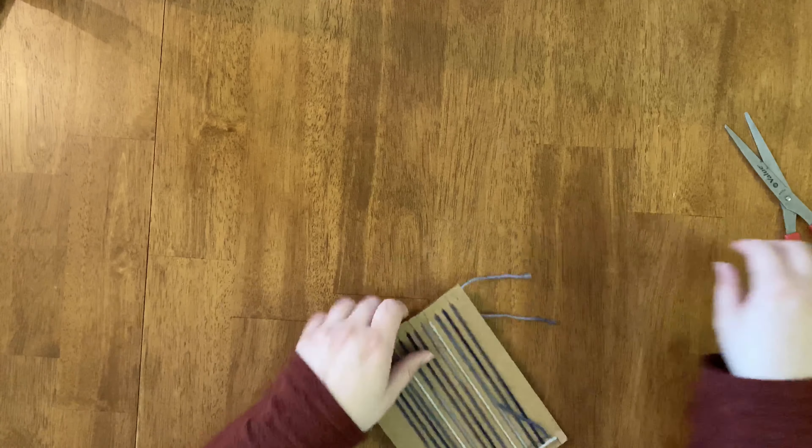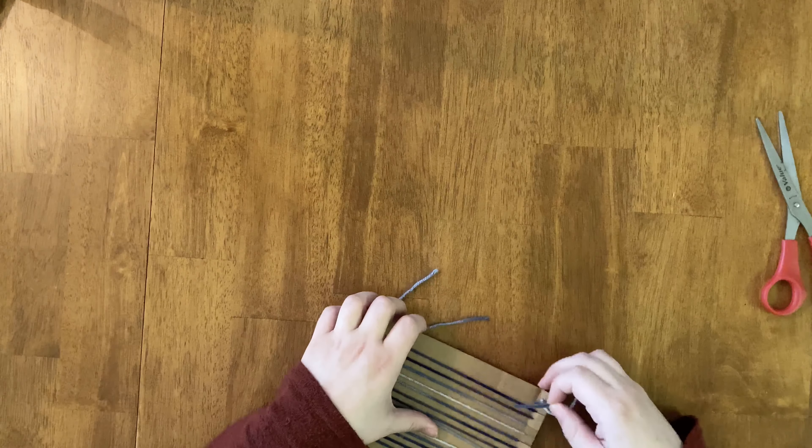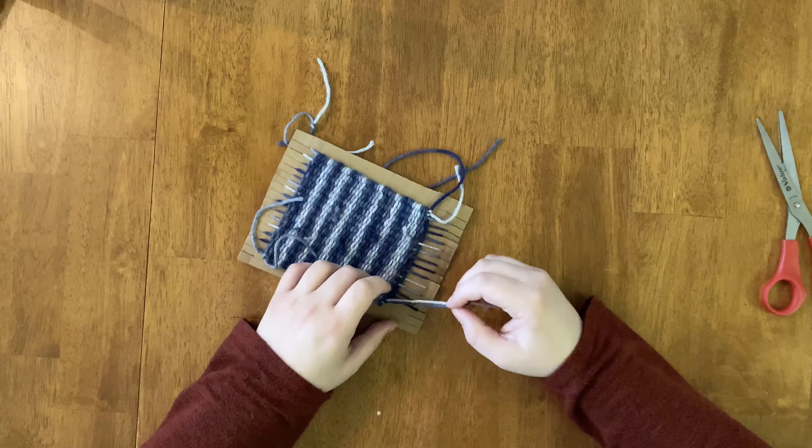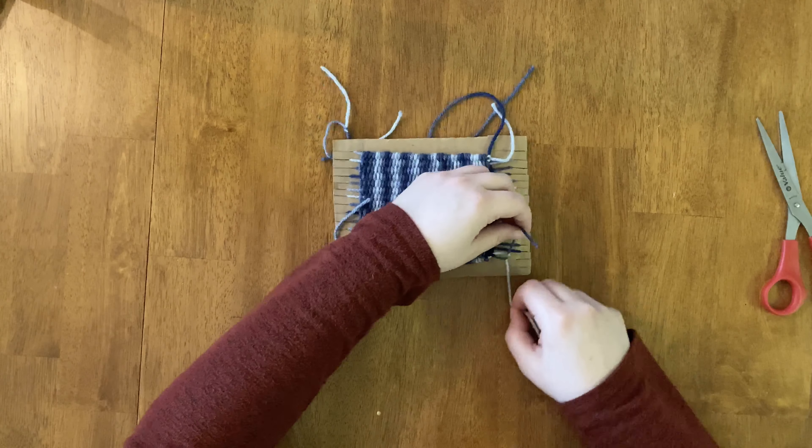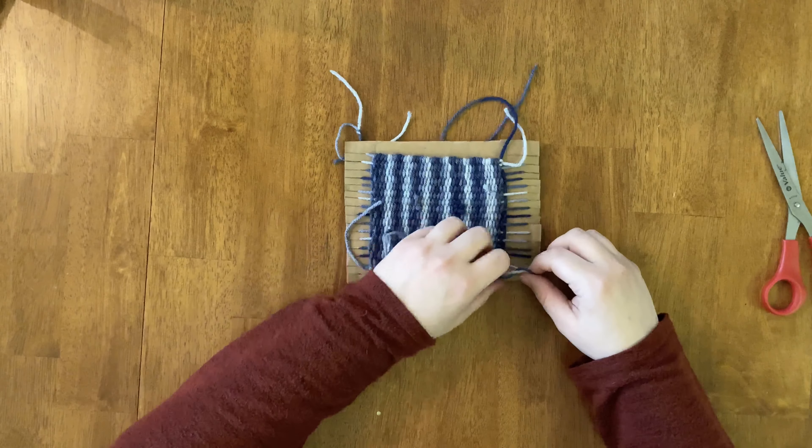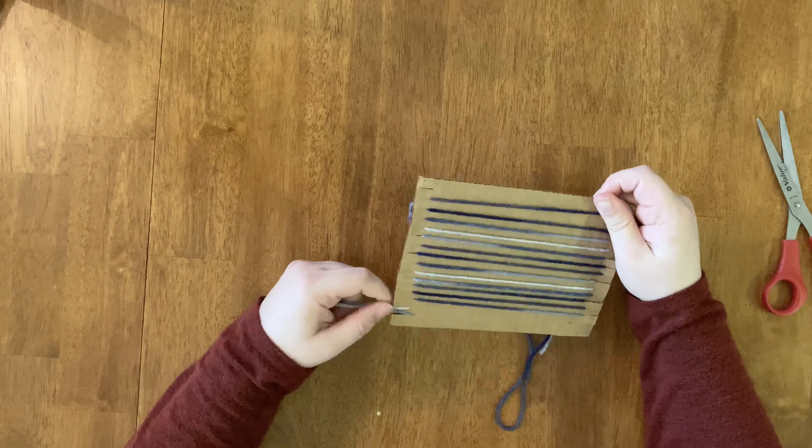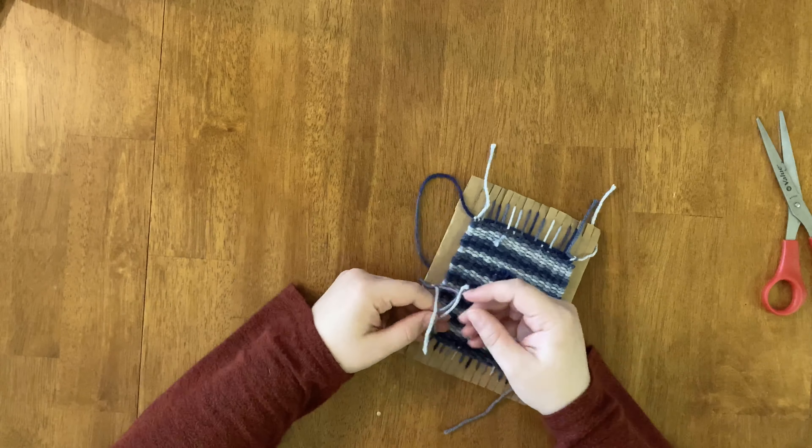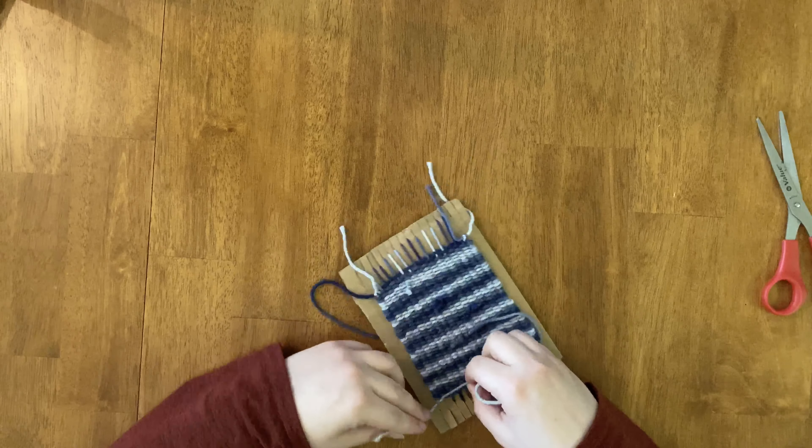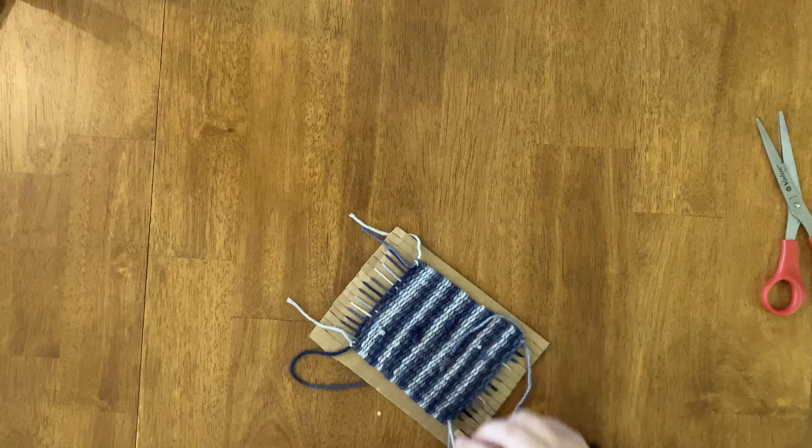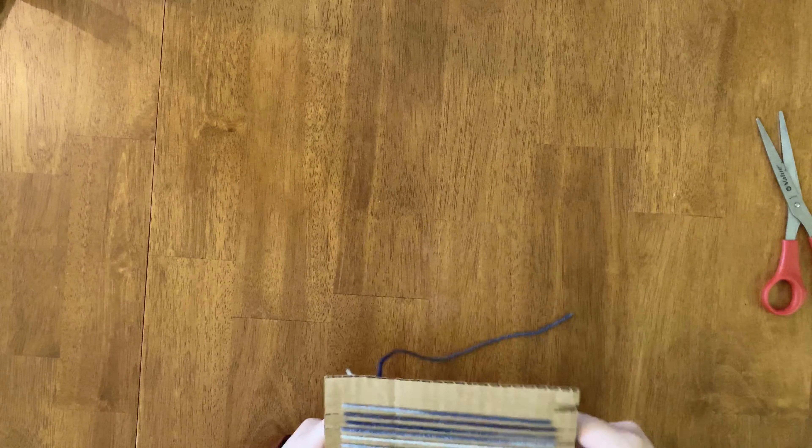Then I flipped my loom over to the back and looked for one of the warp strings I had already cut to secure my weft. Much like securing your weft you'll tie two knots with two warp strings, a loose knot and then a tight knot. Secure the loose warp strings first and then as you run out of loose strings cut warp strings to continue on.